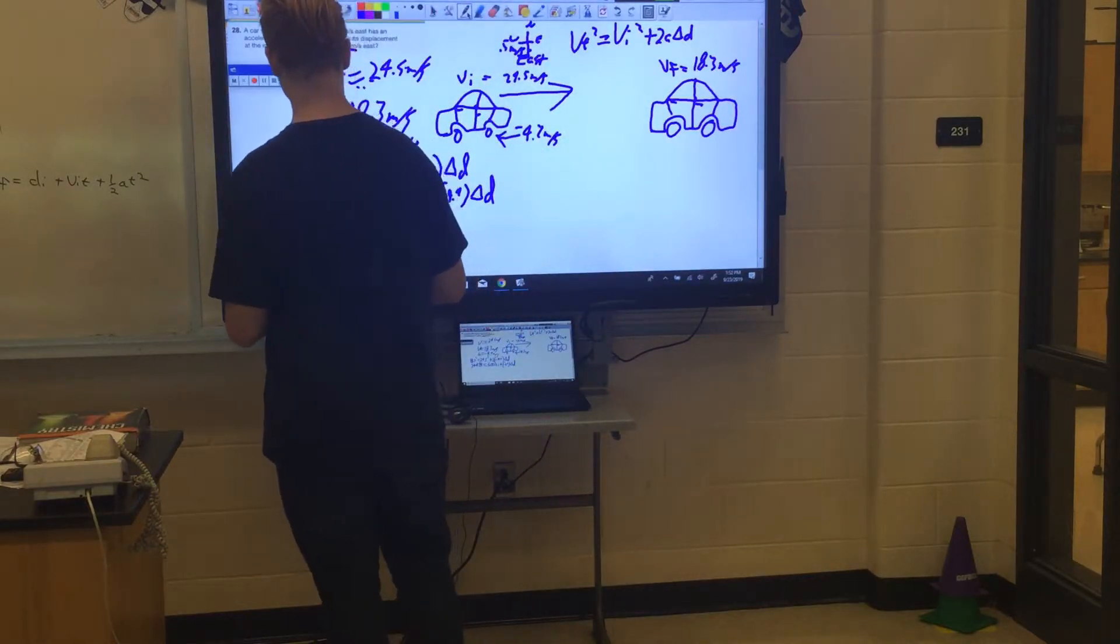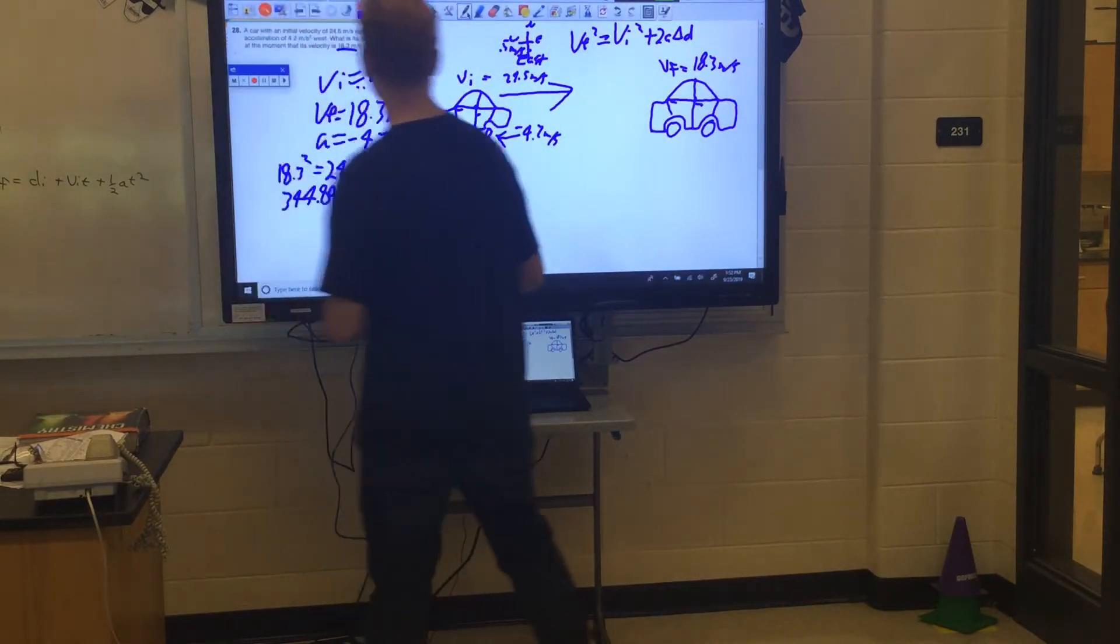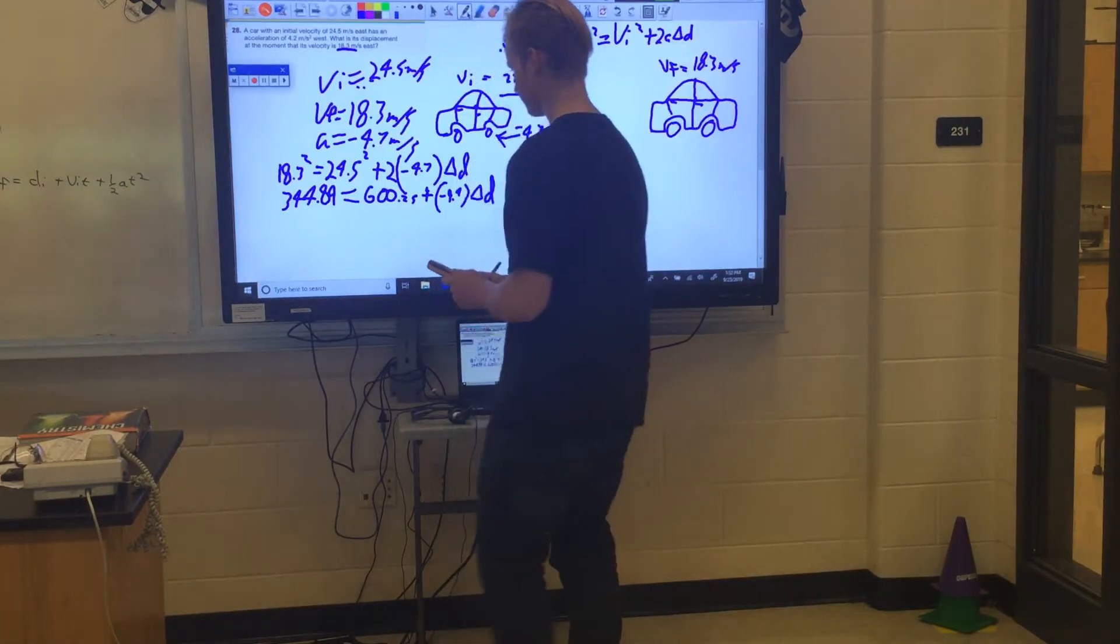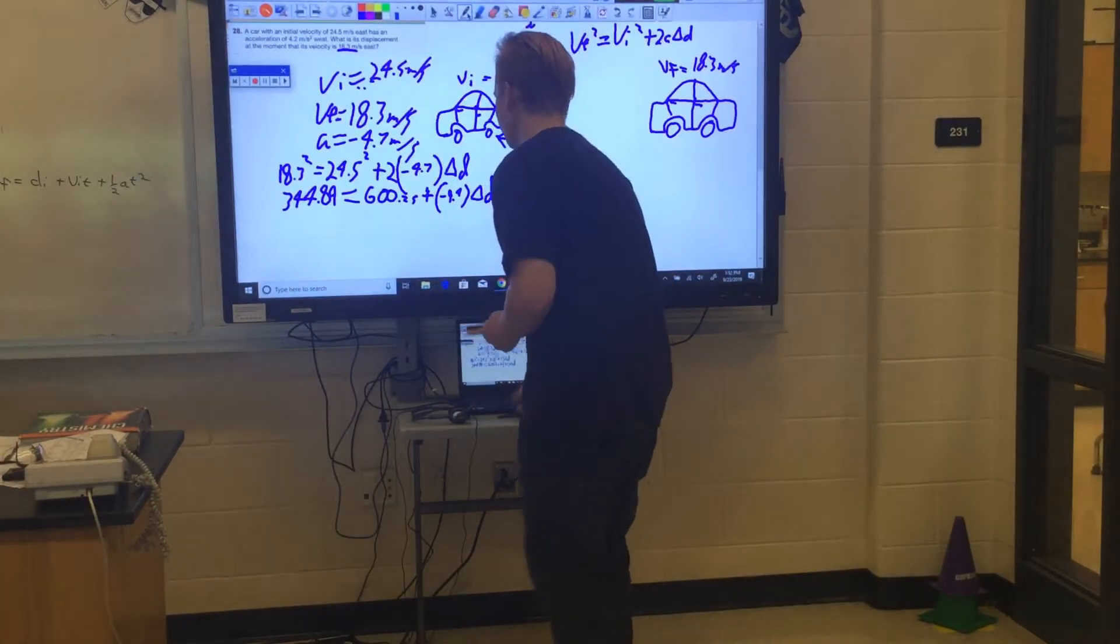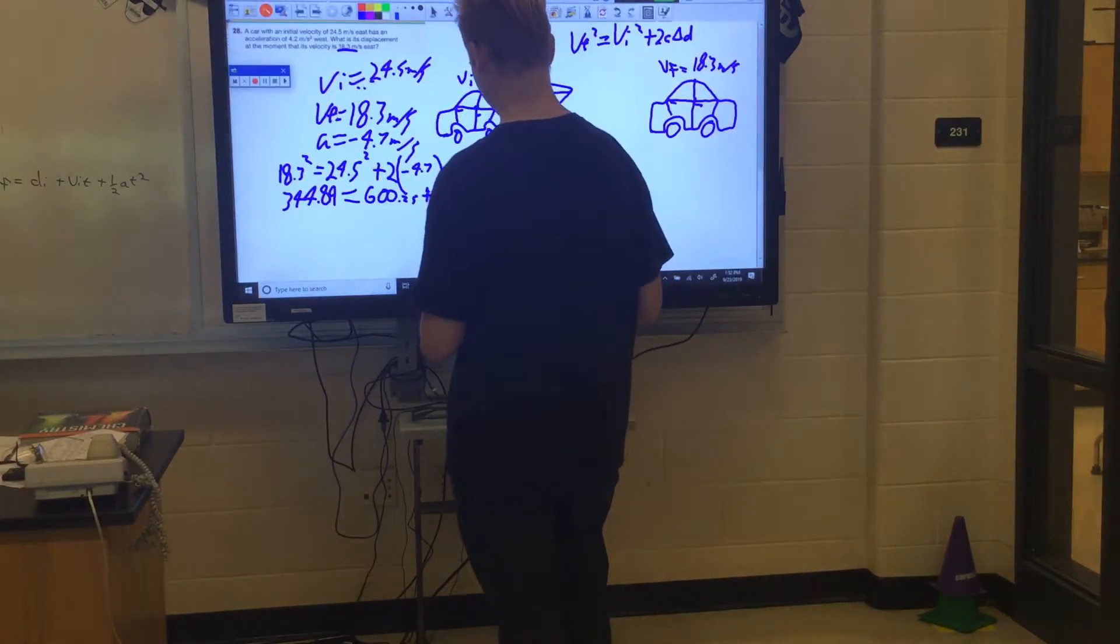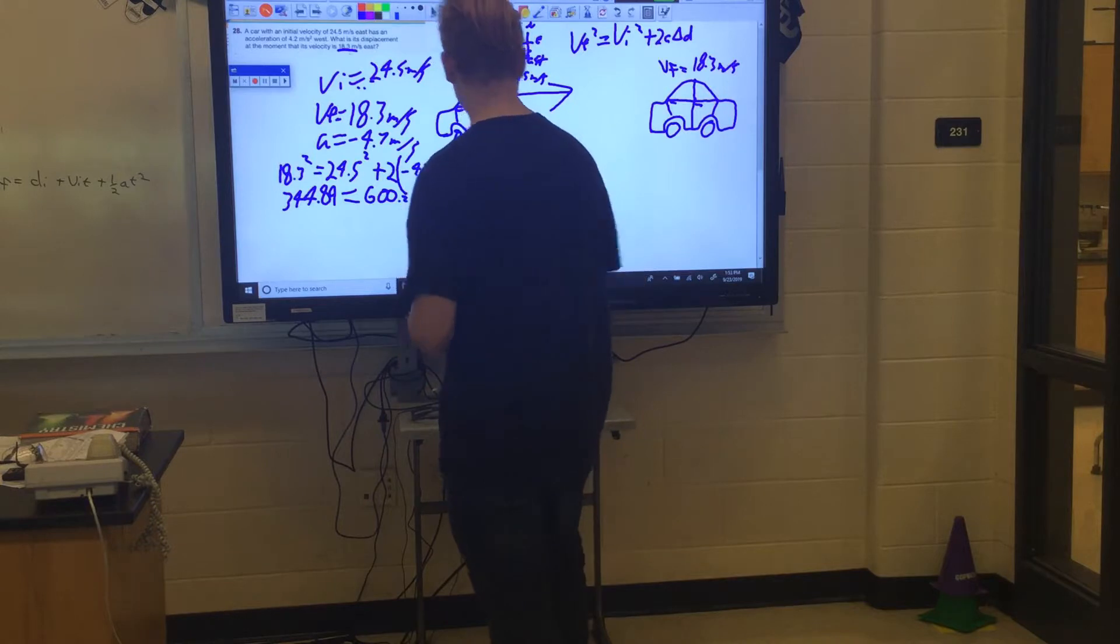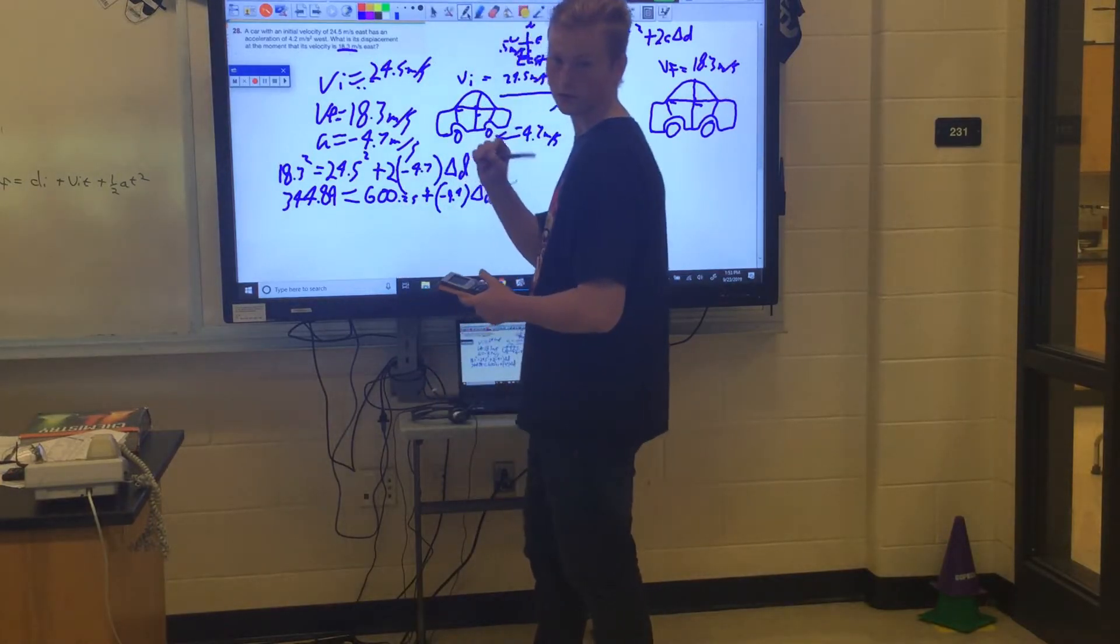Okay, just sum it up there for us, Ryan. What'd you get? Delta d equals 31.59 meters. Good. Indigo, just write 31.59 meters equals delta d.